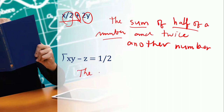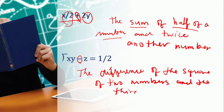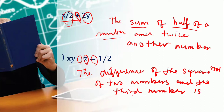How about this one: the square root of xy minus z equals one half. We can say: the difference — since we have a subtraction sign — of the square root of two numbers and a third number is one half. So: the difference of the square root of the two numbers and the third number is half or one half.